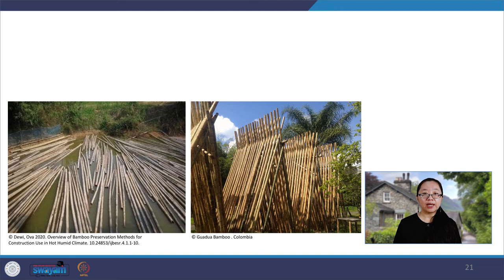In the contemporary world today, treatment of bamboo has developed into several new methods, such as microwave drying, injection, preservation by immersion, surface bleaching, and others. To sum up, to be able to use bamboo as building materials, one must take precautionary actions to treat it before use.